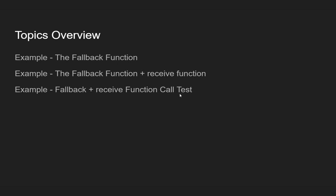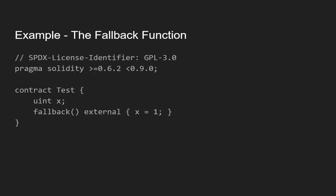To begin, we have to define two contracts. The first contract is called 'Test.' It has a simple unsigned integer state variable called x, and it also has a fallback function with external visibility. This function will just assign the hard-coded value one to our state variable x.